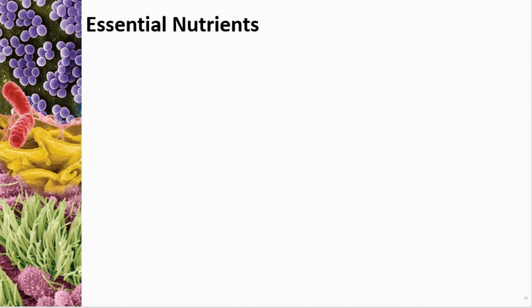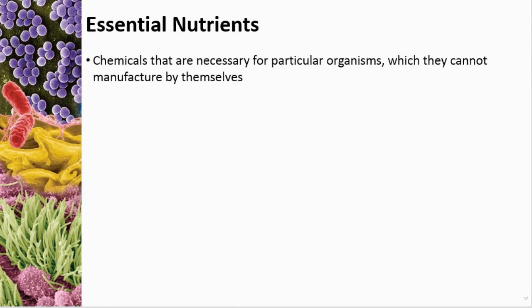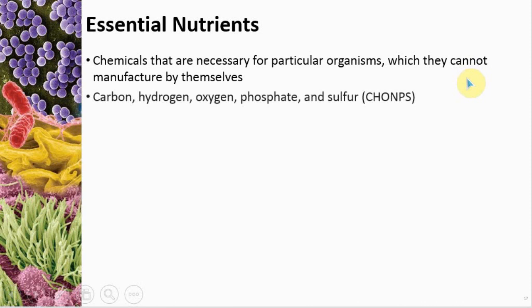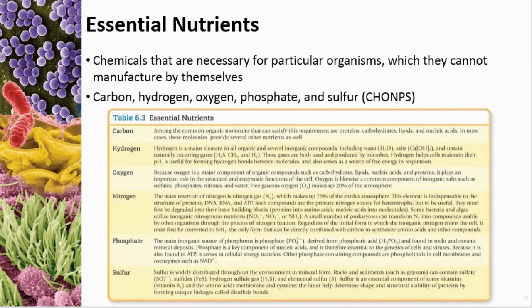Remember the term 'essential': the key point is that these nutrients cannot be manufactured by the organism themselves — that's why we call them essential, not just because they're necessary. Examples are carbon, hydrogen, oxygen, phosphate, and sulfur. When we talk about manufacturing, we're really talking about molecules. Table 6-1 in your book lists the essential nutrients and some of their uses — for example, carbs, lipids, and nucleic acids all need carbon.